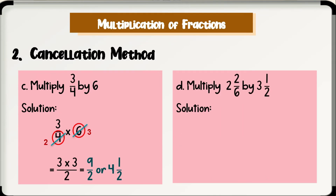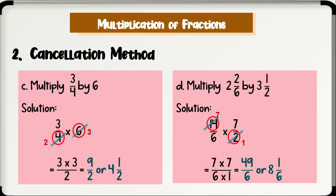Letter D: multiply 2 and 2 over 6 by 3 and 1 half. Solution: write the mixed fractions as improper fractions — 2 and 2 over 6 is 14 over 6, and 3 and 1 half is 7 over 2. Next, perform the operation using the cancellation method. 14 and 2 have a common factor: 14 divided by 2 is 7 and 2 divided by 2 is 1. Rewrite the uncancelled factors: 7 times 7 over 6 times 1. Performing the operation gives 49 over 6, or 8 and 1 over 6. Therefore, 2 and 2 over 6 times 3 and 1 half is equal to 49 over 6, or 8 and 1 over 6.